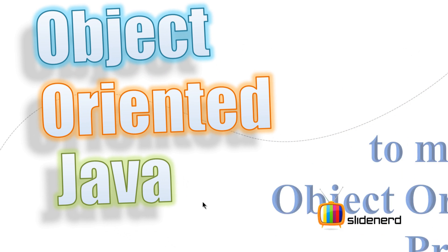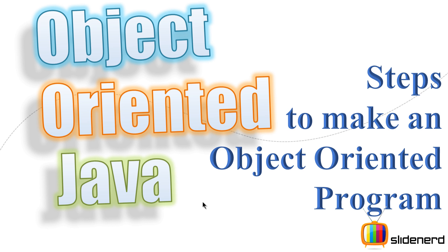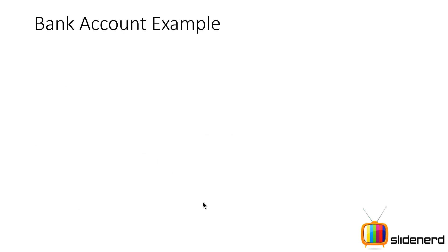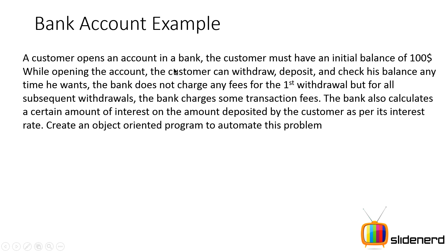Hello dear subscribers and watchers, this is Vivz from SlideNet. In this video we're going to talk about how to create an object-oriented program in Java. All these days we were talking about theoretical stuff — it's time we started looking at a practical example. We're going to take the world's most famous beginner example: creating a bank account. The customer opens an account in a bank, must have an initial balance of $100, and while withdrawing money, there must always be $100 remaining inside the account. The customer can withdraw, deposit, and check their balance anytime.